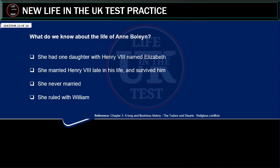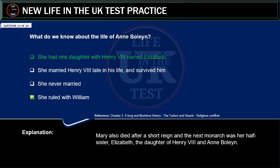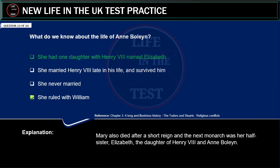What do we know about the life of Anne Boleyn? She had one daughter with Henry VIII named Elizabeth. She married Henry VIII late in his life and survived him. She never married. She ruled with William. Correct answer: she had one daughter with Henry VIII named Elizabeth. Explanation: Mary also died after a short reign and the next monarch was her half-sister Elizabeth, the daughter of Henry VIII and Anne Boleyn.